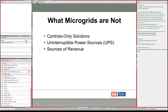People also confuse microgrids with uninterruptible power. They're really not the same. You can have a UPS as a component of a microgrid, but the microgrid itself is not a source of UPS power—it's just a way of using different generation assets with different loads as necessary. There really isn't a payback for a microgrid itself. Assets within it can have payback, but the microgrid configuration doesn't provide a payback on its own.